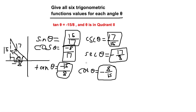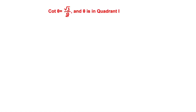To verify the signs: sine is only positive in the second quadrant and everything else is negative. That's why tangent, cosine, secant, and cotangent are all negative. These are the six trigonometric functions for this problem. Now moving on to the next problem.